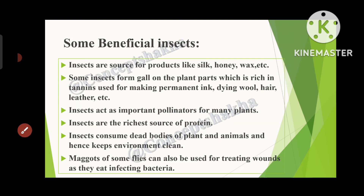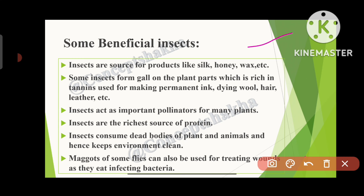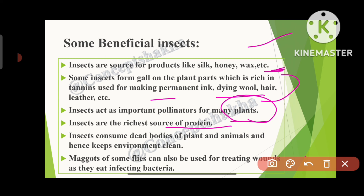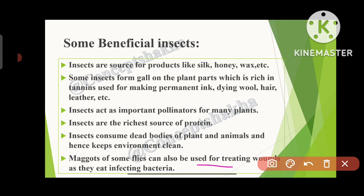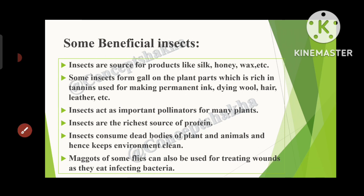Not all insects are harmful — there are many beneficial insects. Insects are sources of silk, honey, and wax. Some insects form galls on plant parts rich in tannins, used for making permanent ink, dyeing wool, hair, and leather. Insects are important pollinators for many plants and are the richest source of protein. They also consume dead bodies of plants and animals, keeping the environment clean. Maggots of some flies can even treat wounds by eating infecting bacteria.